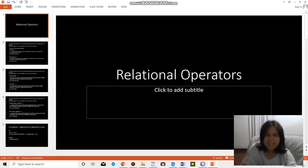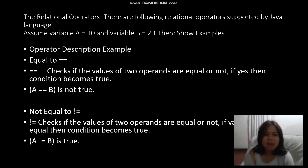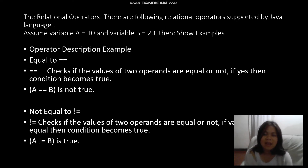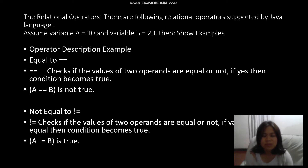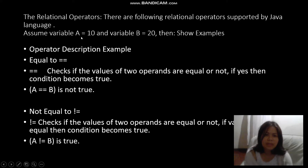Today we will be discussing relational operators together with the if condition. These are boolean type operators, meaning the result is either true or false — unlike arithmetic operators where the result is a numeric value. For example, n1 plus n2 equals a numerical value, but in relational operators the result is either true or false.